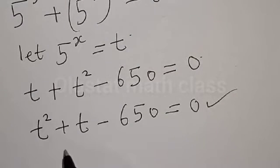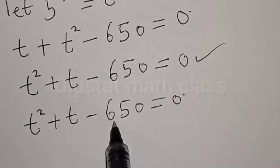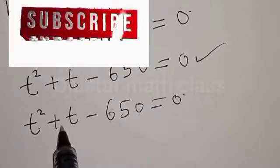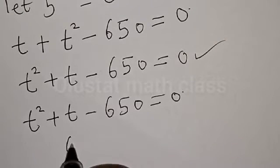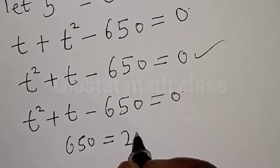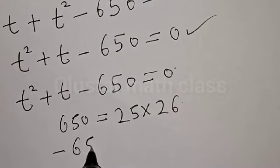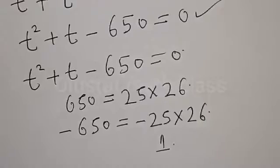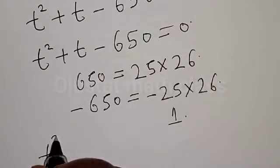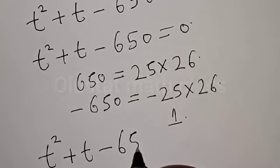We can solve this equation by factorization method or using the quadratic general formula. In this case, we are going to make use of the factorization method. We look for two numbers so that the product will be minus 650 and the sum will be plus 1, because the coefficient of t is 1. Now let's factor 650. We have 650 as 25 multiplied by 26, so minus 650 is minus 25 multiplied by 26.